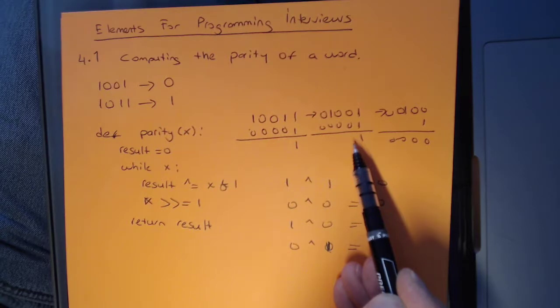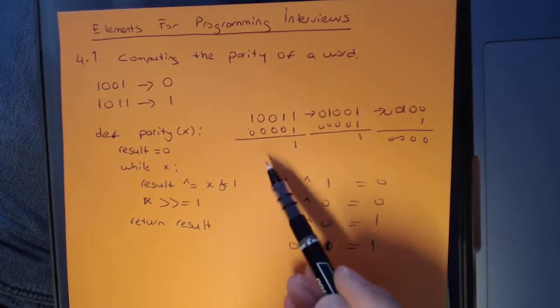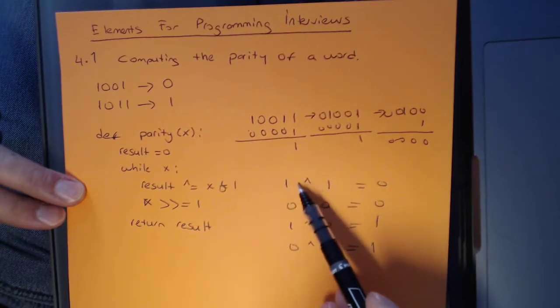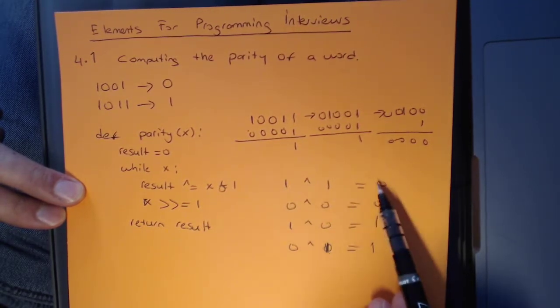Now, we have 2 bits set. So we want XOR operation to give us a 0. And that's exactly what it's going to do. When the result is already 1 and you get another set bit, you're going to get 0.